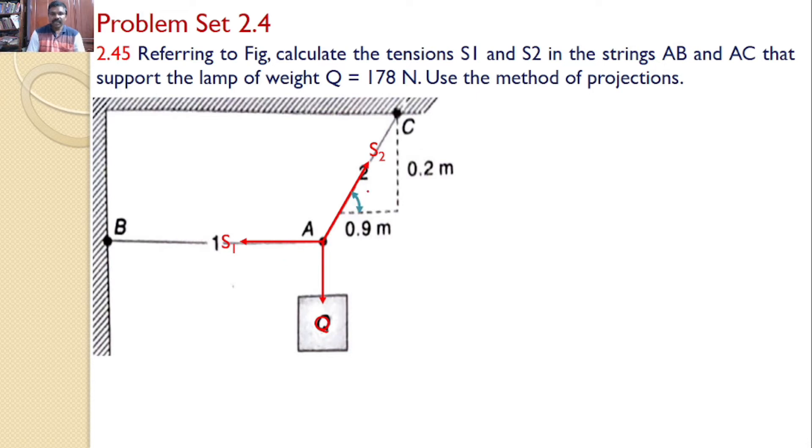Let us find the angle made by the S2 with the horizontal. So let this angle is theta and from this right angle triangle, I can say tan theta is equal to 0.2 by 0.9 and I can find that theta value as 12.53 degrees.